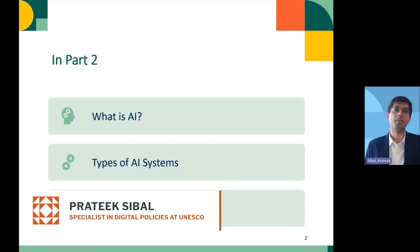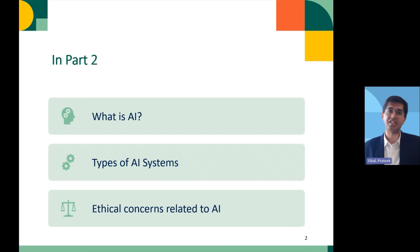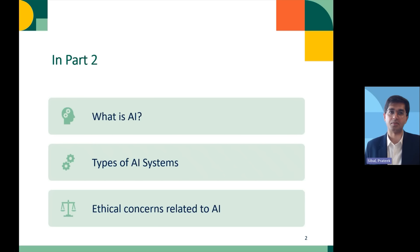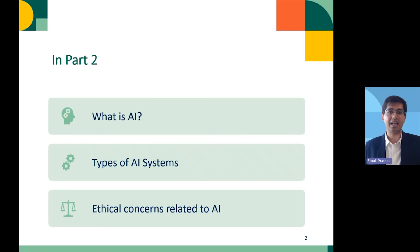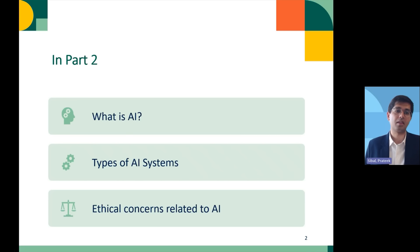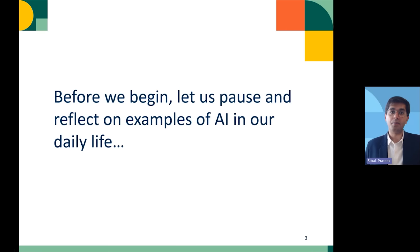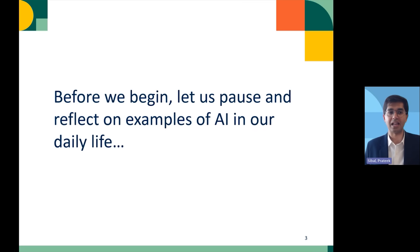In part two of this module, we are going to talk about the basics of artificial intelligence, the different kinds of AI systems, and some of the ethical concerns related to these systems. The idea is not for us to become technical experts on AI, but really to develop an intuition about this technology and the way it works. Before we begin, I have a small activity: if you have a pen and a piece of paper, I invite you to pause the video and write down three examples of AI that you come across in your daily life.